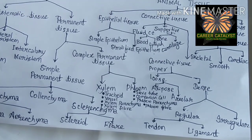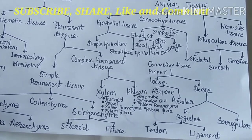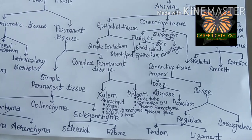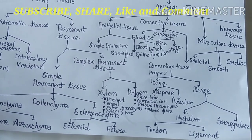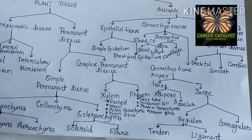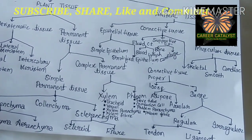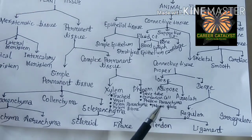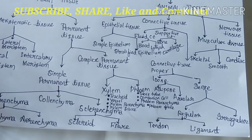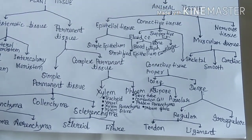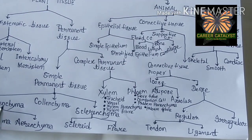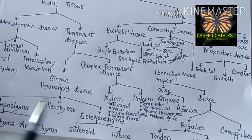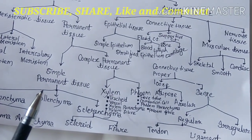Tendon connects bone with muscle, whereas ligament connects two different bones. Irregular dense connective tissue proper — skin is an example. Connective tissue is the most widespread tissue in the animal body; as its name suggests, it connects various internal organs and body parts.